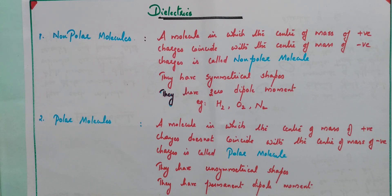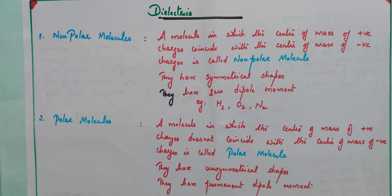The next type is polar molecules. Polar molecules means the center of mass of positive charges does not coincide with the center of mass of negative charges — that means positive and negative charges are slightly separated. Such molecules are called polar molecules. They have unsymmetrical shape and since positive and negative charges are separated, such molecules have a permanent dipole moment.